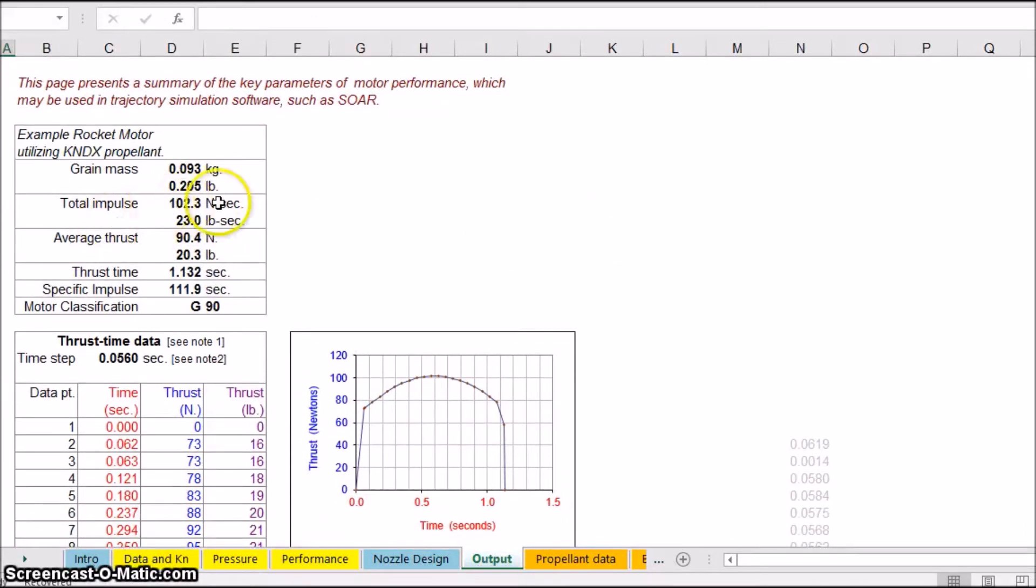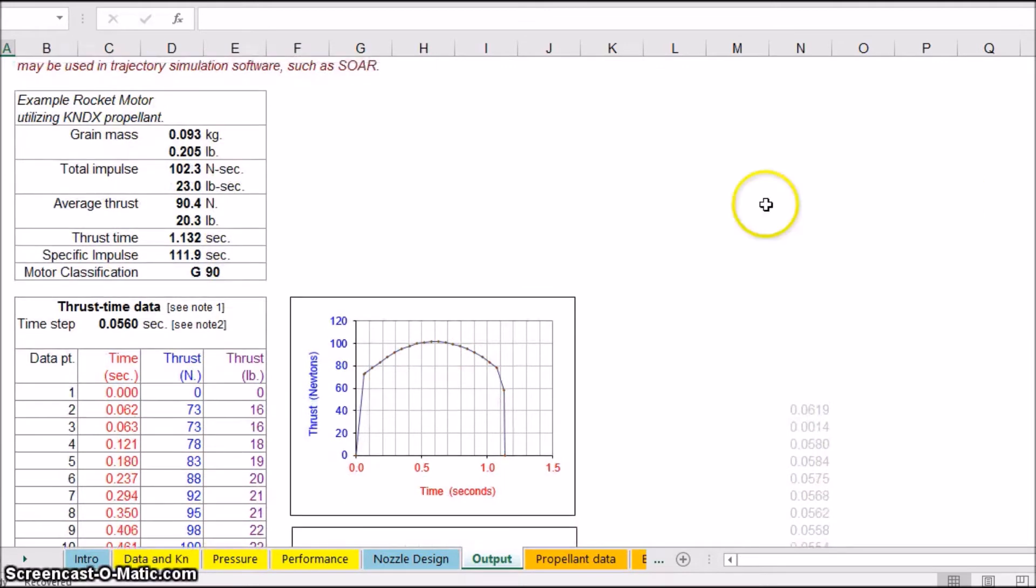This is the output data that it estimates. So you've got total impulse 102 newtons, average thrust 90 newtons, thrust time 1.132 seconds, which is actually incredibly accurate. It's got a motor classification of G. I didn't know how close this would be, but it's saying 1.3 seconds.